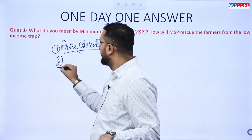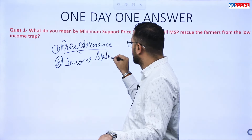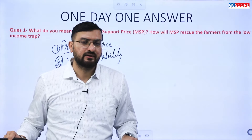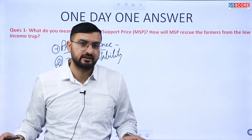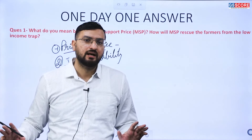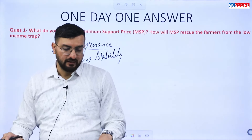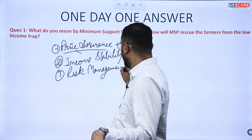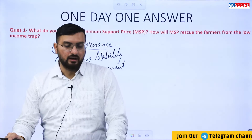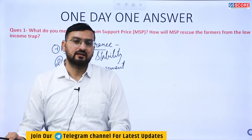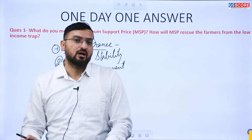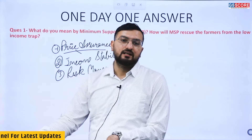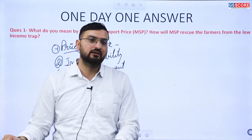The second point is income stability. Because the farmer knows the MSP before the sowing season, he can calculate expected income based on his land's productive capacity — whether 100 kg, 200 kg or 500 kg per season — and plan accordingly. The third point is risk management. With MSP, farmers are protected against unpredictable weather, market fluctuations and rising input costs. If prices fall below the MSP, they can switch to other crops or sell to the government, enabling effective risk mitigation.